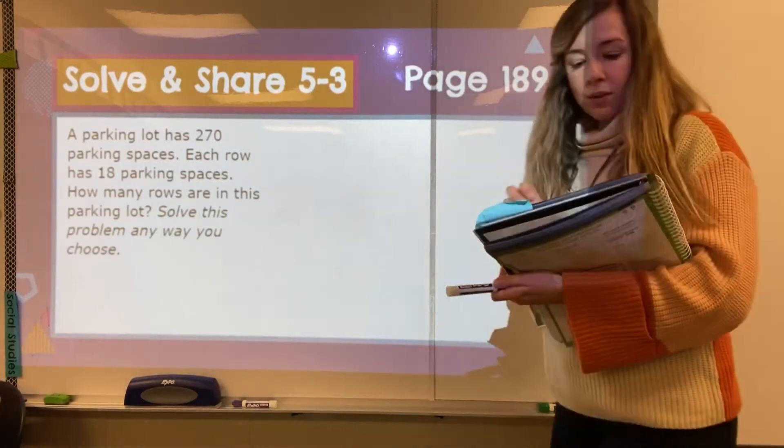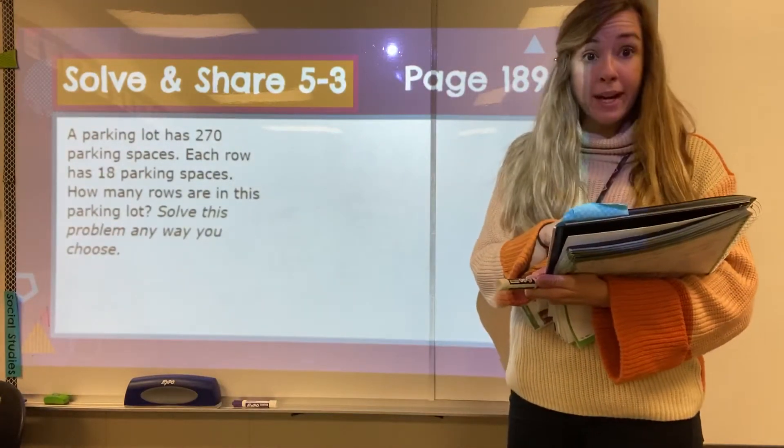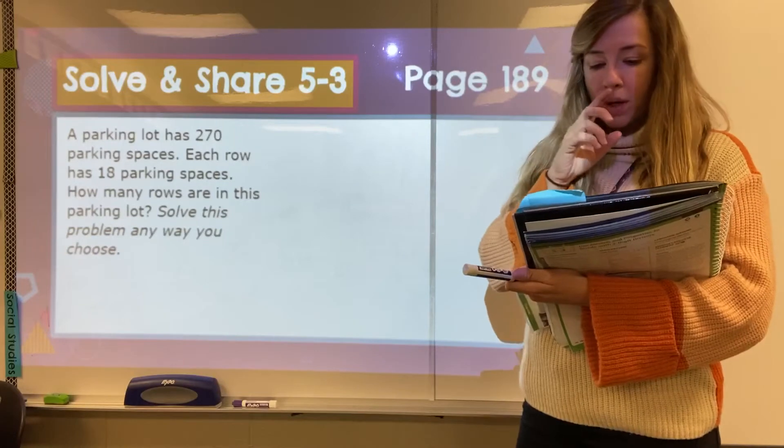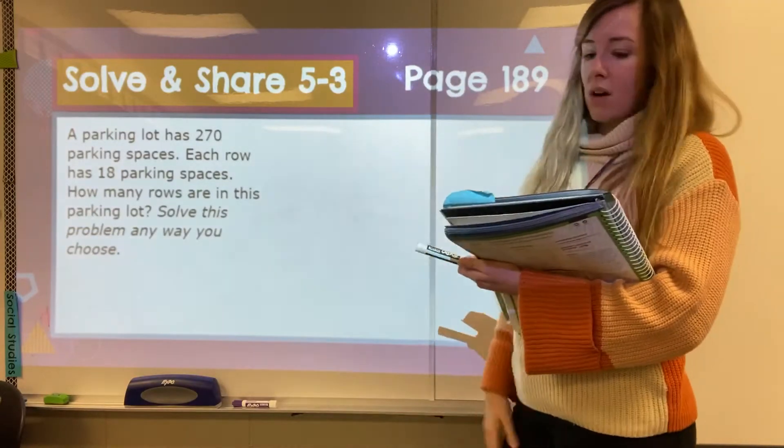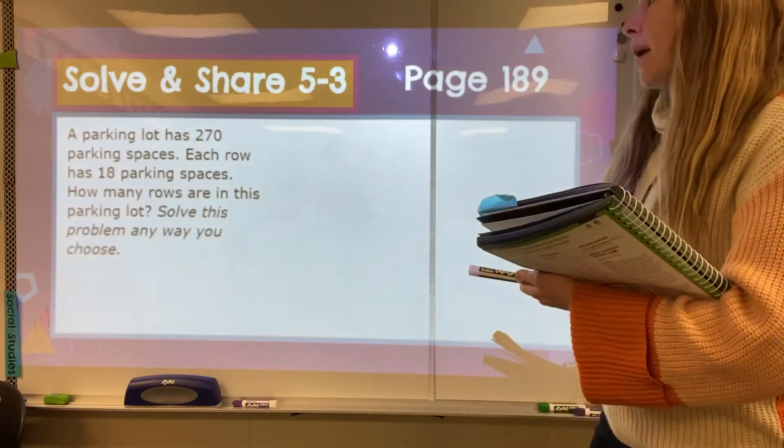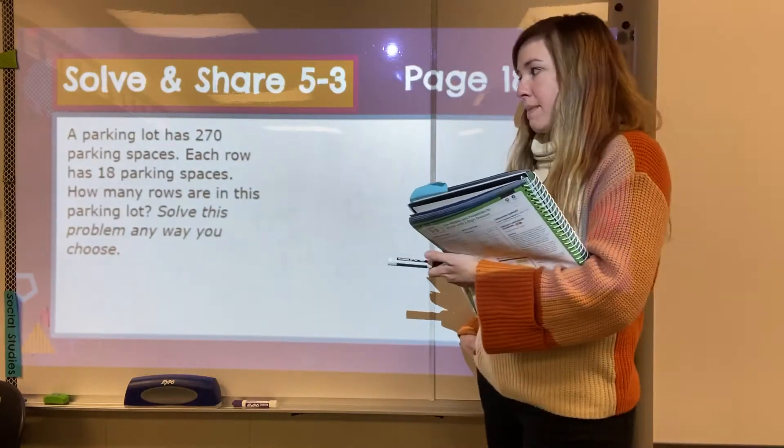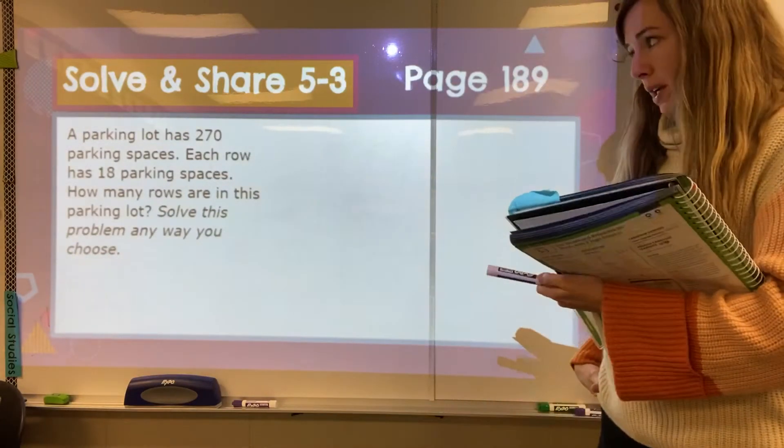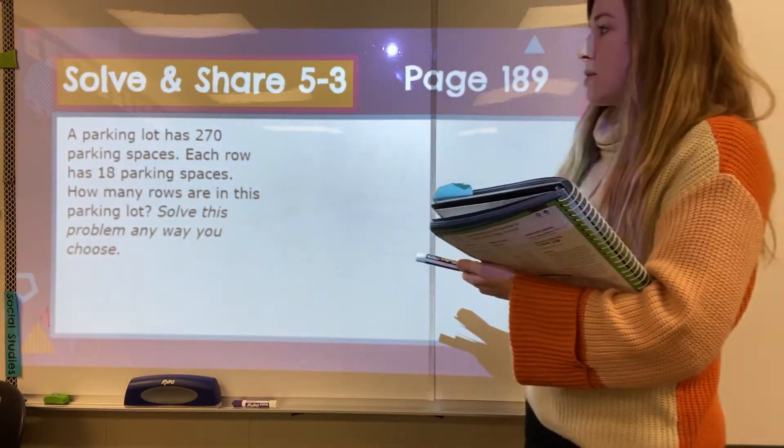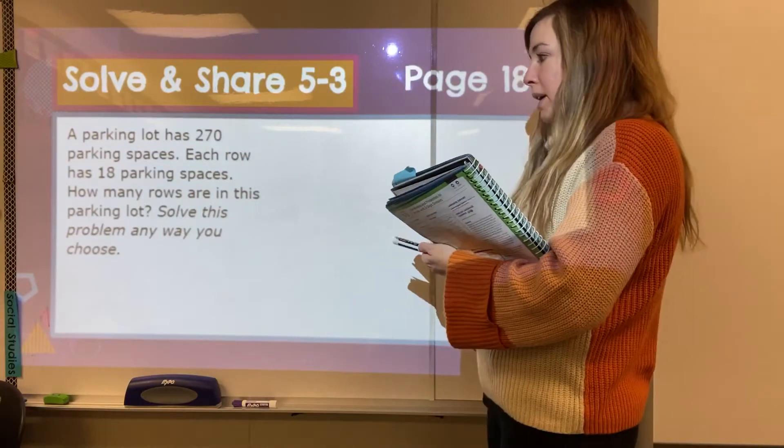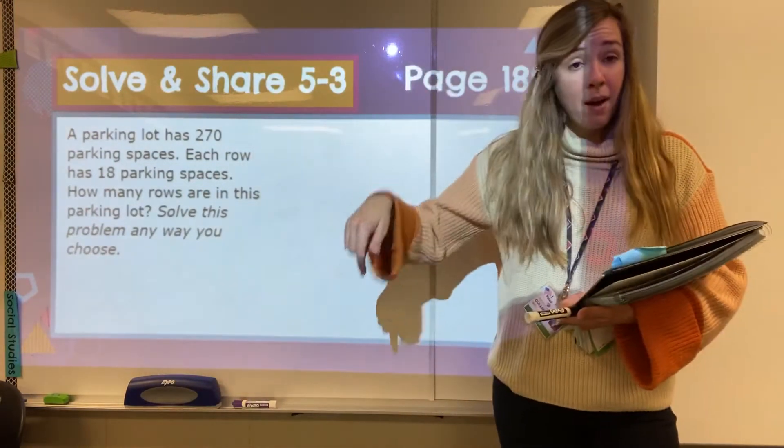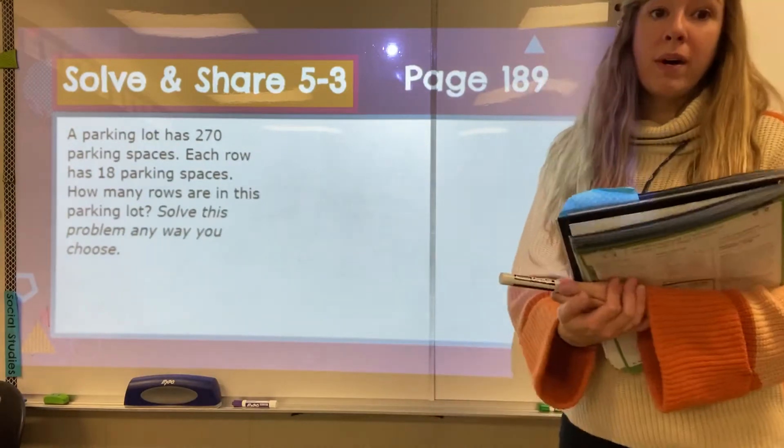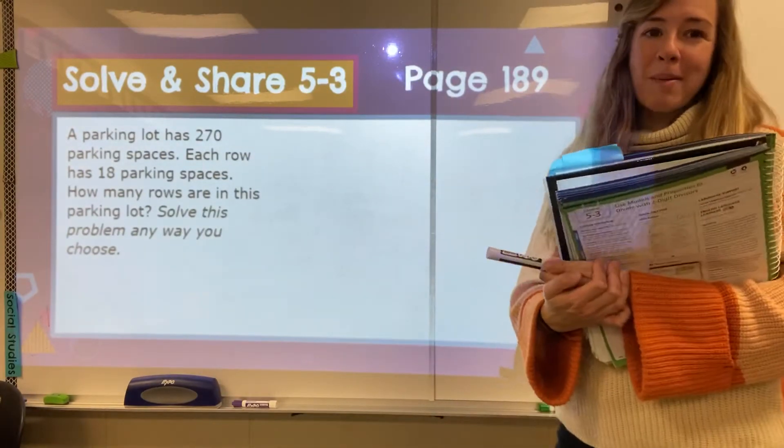Okay, so you guys have a grid. You need your workbook out and open. You have a grid on your workbook that you'll be able to work through. And here is our solve and share problem. A parking lot has 270 parking spaces. Each row has 18 parking spaces. How many rows are in this parking lot? Solve this problem any way you choose. So go ahead and pause the video here and you will go ahead and try to solve through this and then we'll talk about it together.